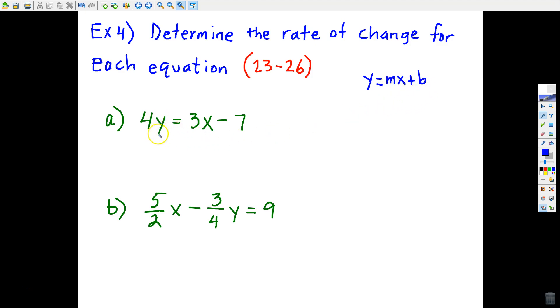Slope-intercept. It's almost there on letter A, except we need to solve it for Y. And to solve for Y, there's two ways of looking at it. You can divide by 4 on both sides, everything divided by 4. So, solving for Y gets me Y equals 3 fourths X minus 7 fourths. So, anytime an equation is in this form, we call slope-intercept form, the rate of change is easy enough to spot. It's the coefficient of X. So, in letter A, my answer would be 3 fourths.